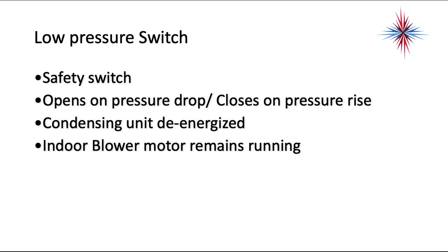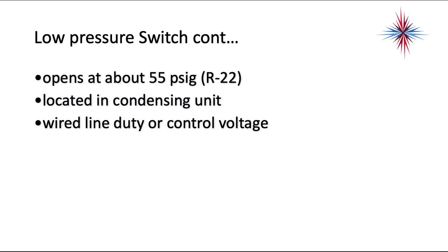A low pressure switch is also a safety switch. It opens on a pressure drop and closes on a pressure rise. The purpose is to de-energize the condensing unit if the refrigerant pressure gets too low. The indoor blower motor will remain running — the pressure switches only de-energize the outside unit. The low pressure switch opens at about 55 PSIG for R22. It's located in the condensing unit and wired either line duty or control voltage, most often now control voltage.